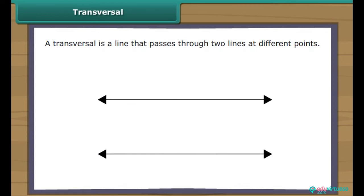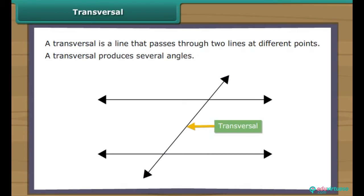A transversal is a line that passes through two lines at different points. Mostly, a transversal produces several angles.